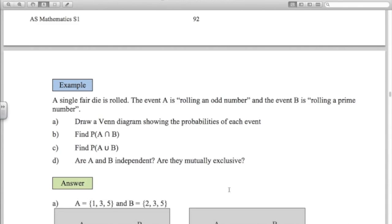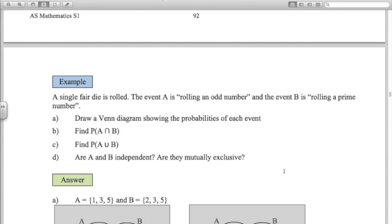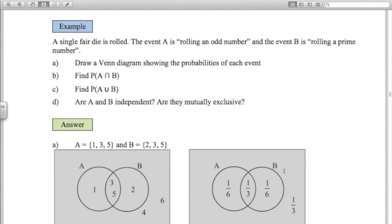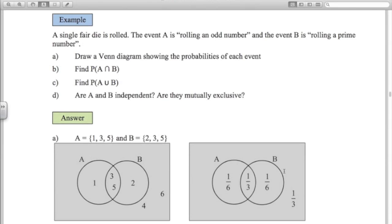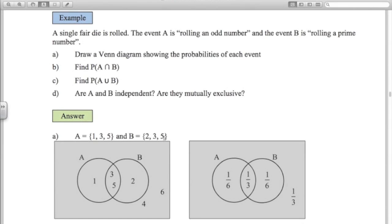Example. A single fair die is rolled. Fair means that it has equally likely chance of coming up 1, 2, 3, 4, 5 or 6. Event A is getting an odd number and B is rolling a prime number. So let's write these out. So A, odd numbers, 1, 3 and 5. B, the prime numbers, 2, 3 and 5. We can put them in our Venn diagram so it looks like this. So the outcomes that are in both A and B are 3 and 5.